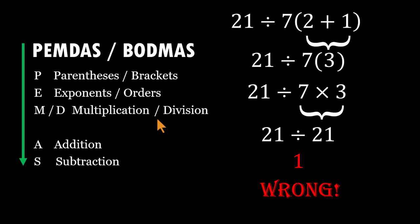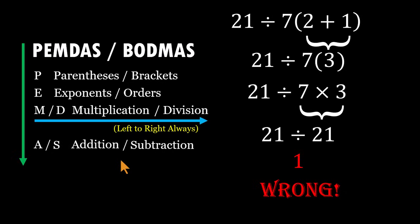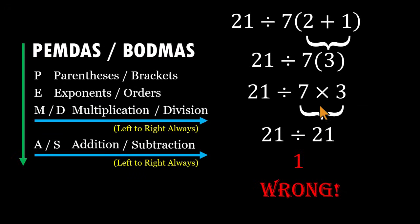When they appear together, you move strictly from left to right. The same rule applies to addition and subtraction. In this problem, multiplying before dividing leads to the wrong result. So let's do it correctly from this point on.